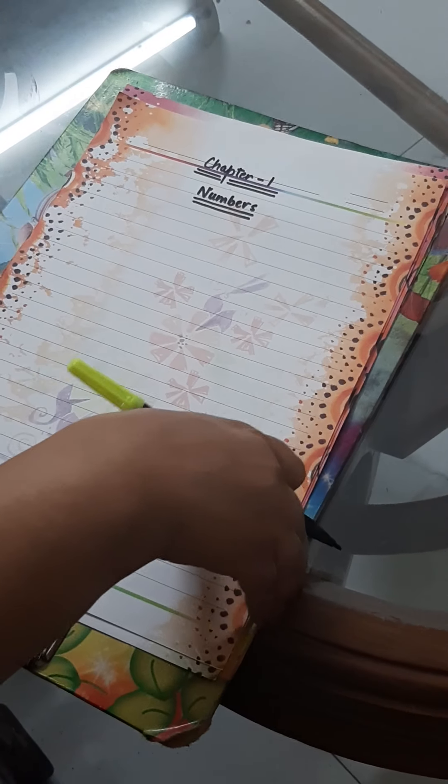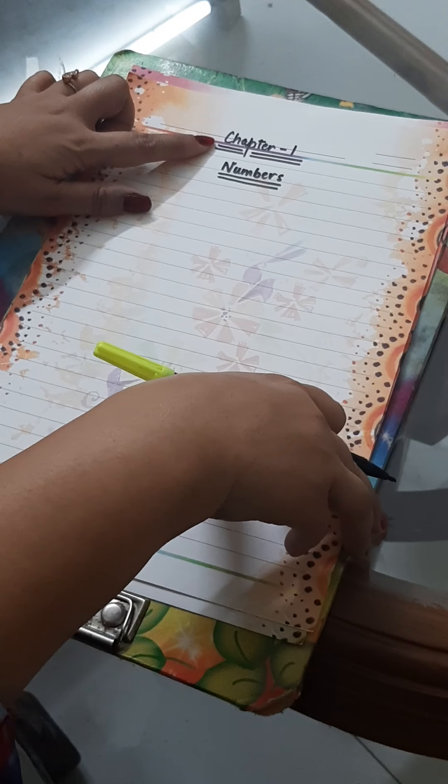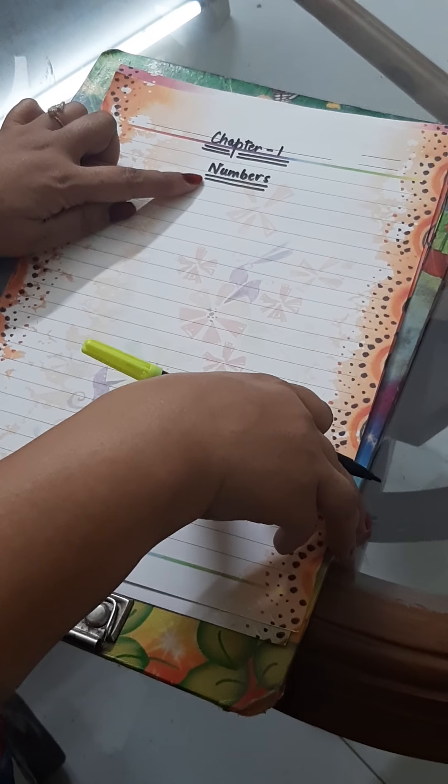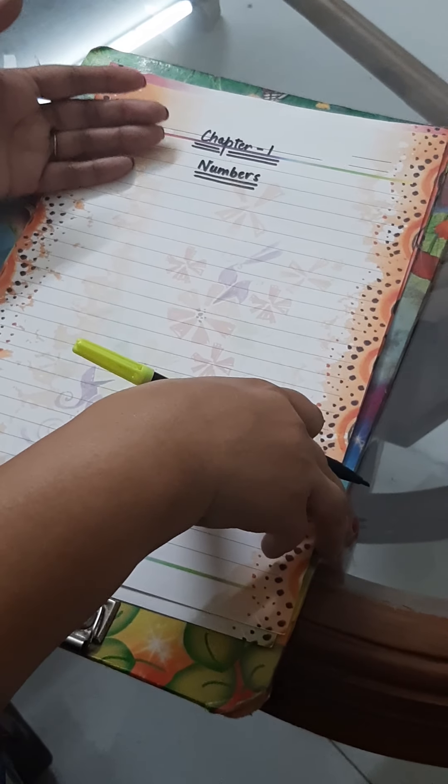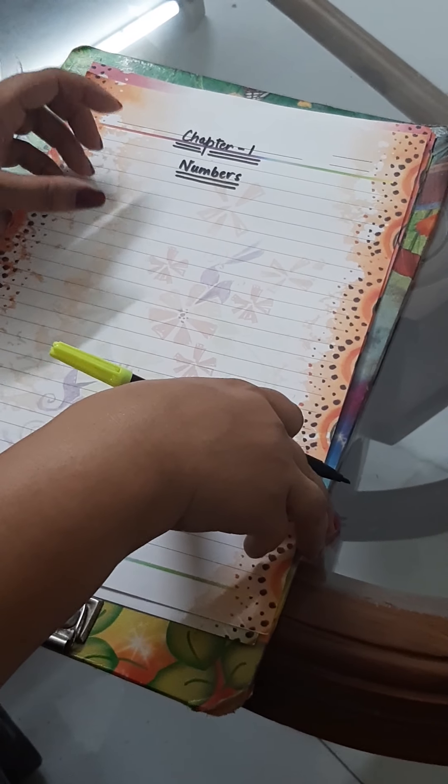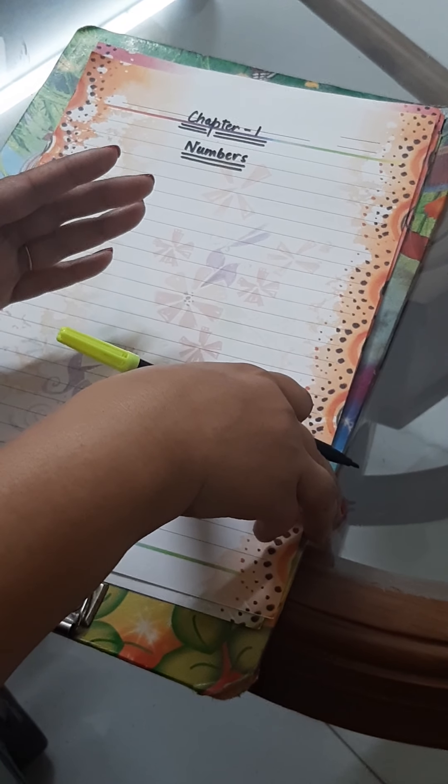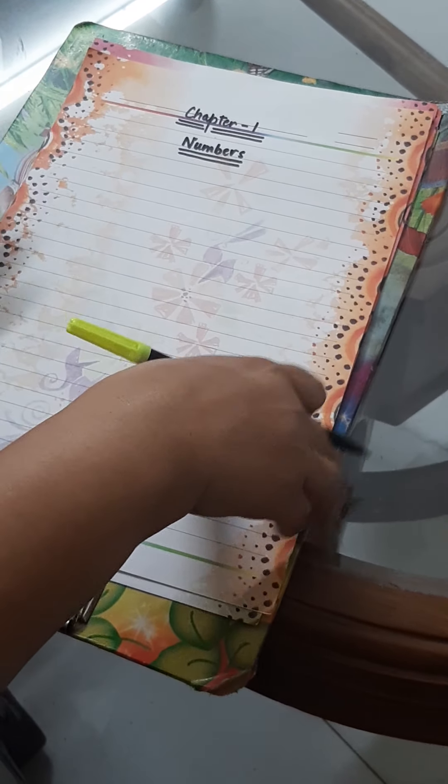Good morning children. We are starting with maths class and we will start with chapter number 1, that is numbers. You all have done numbers. The numbers are different digits. When 2 or 3 digits combine, they become a number. You have done numbers up to 100. Very good children.